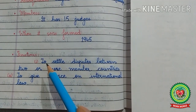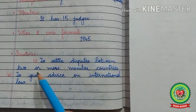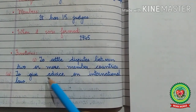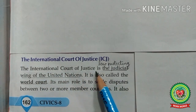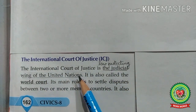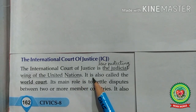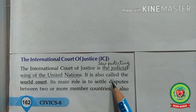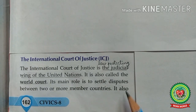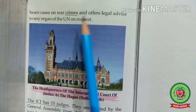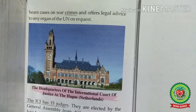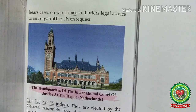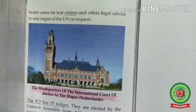The functions of the ICJ: first, to settle disputes between two or more member countries; second, to give advice on international law. The ICJ is the judicial wing of the United Nations and its main role is to settle disputes between member countries. It also hears cases on war crimes and offers legal advice to any organ of the United Nations on request, though its opinion is not binding on UN organs.